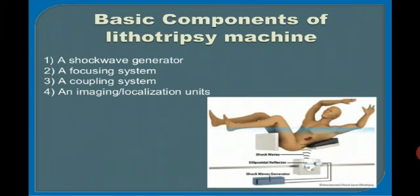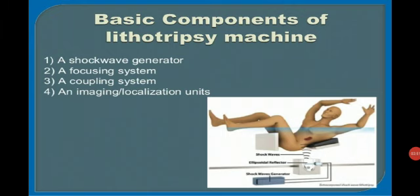Now we will see the basic components of the lithotripsy machine. The first is the shockwave generator, which produces an expansion wave propagating into higher pressure gas. The second component is the focusing system, which creates the shockwave at one focal point and converges it at a second focal point.